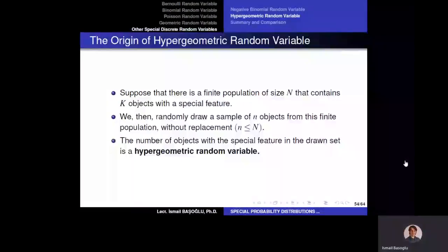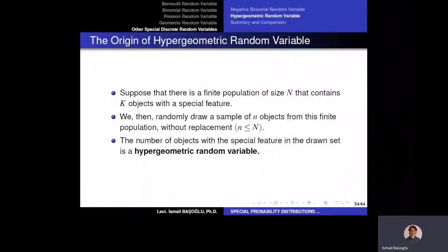The next special discrete random variable, and the last one, is the hypergeometric random variable. By looking at the name, we may think there is a relationship between the geometric and the hypergeometric random variable, but that is not the case. Suppose there is a finite population of size capital N that contains k objects with a special feature.